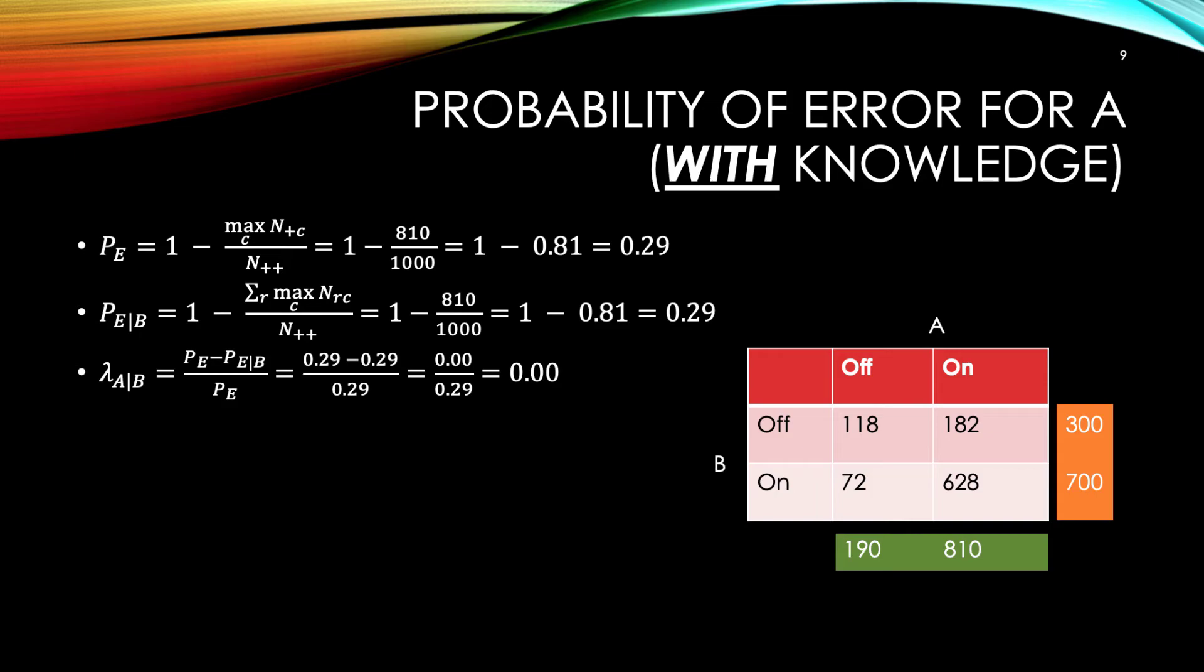I won't bore you here, but in this slide, I show the mechanics of computing lambda of A given B. This time, B is in the row, or we are using knowledge of B to predict A. The contingency table is simply transposed, but the formulas work the same way. The result is that lambda of A given B is 0%. Meaning, given knowledge of B, we can expect 0% reduction in the probability of predictive error of A. Remember, I simulated the data from a Bayesian belief network where A is the cause and B is the effect. I sample a value for A first, then based on that value, I sample a value from B. Of course, knowing A would help us predict B, and not necessarily vice versa.